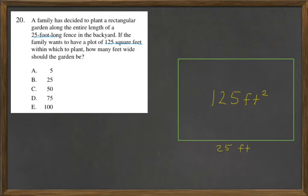So what we are trying to find is this length right here. Because they gave us that it's 25 feet, and we know that when we take length times width, the answer is going to be 125 feet squared.